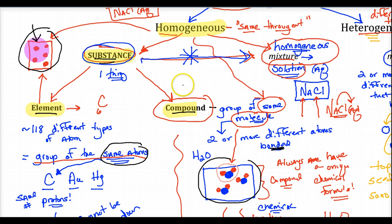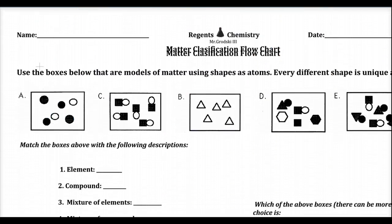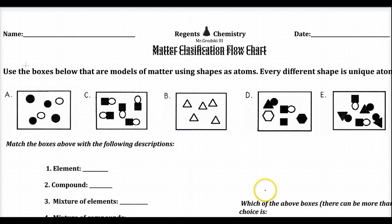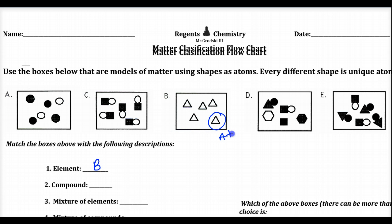A substance is not a mixture. A substance is one thing: either the same type of molecules (a compound) or the same type of atoms (an element). Now let's practice using models on the back of your worksheet. Different shapes represent different types of atoms. An element is a group of the same type of atoms — the same shape. Only one box is made of the same shapes: that's B, the triangle atom.